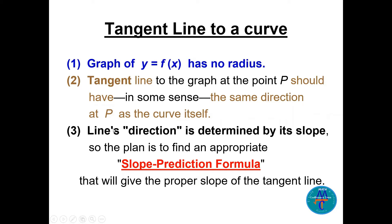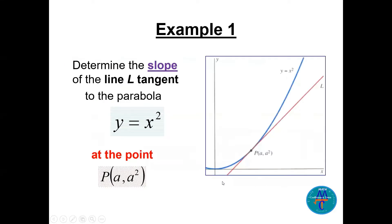What do we mean by a line's direction? It is determined by the slope. In the coming slides we are going to find a slope prediction formula that will give the proper slope of the tangent line to any curve at point P. We will find this formula in a few minutes.